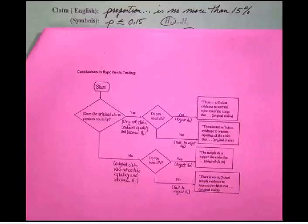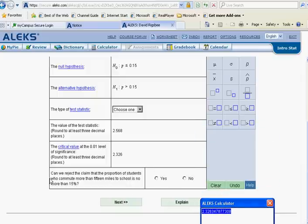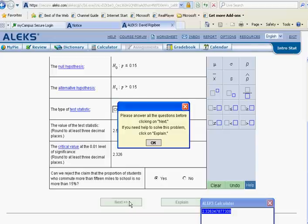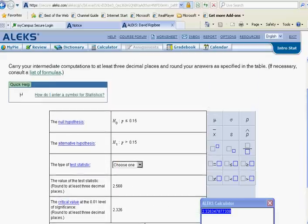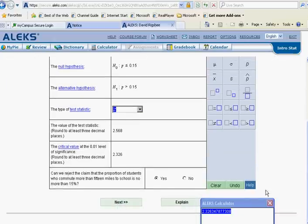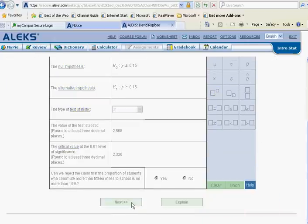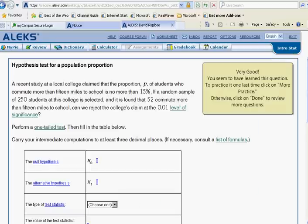Let's go back to ALEKS now. Can we reject that the proportion of students who commute? We say yes, there is sufficient evidence to warrant rejection of the claim. We see here that we need to fill out a few additional boxes. The test statistic is a z, we knew that but we didn't fill it in. Let's check it and we see that we are good to go. This concludes the next to the last section of ALEKS statistics.